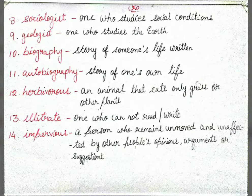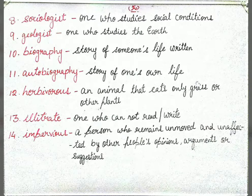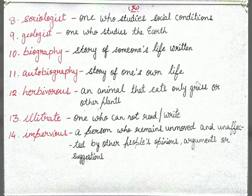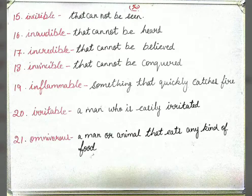The next is 'illiterate' — one who cannot read or write. The 14th is 'impervious' — a person who remains unmoved or unaffected by other people's opinions, arguments, or suggestions. Matlab impervious ek aisa person hota hai jo affect nahi hota kisi aur ke opinions, arguments aur suggestions se.